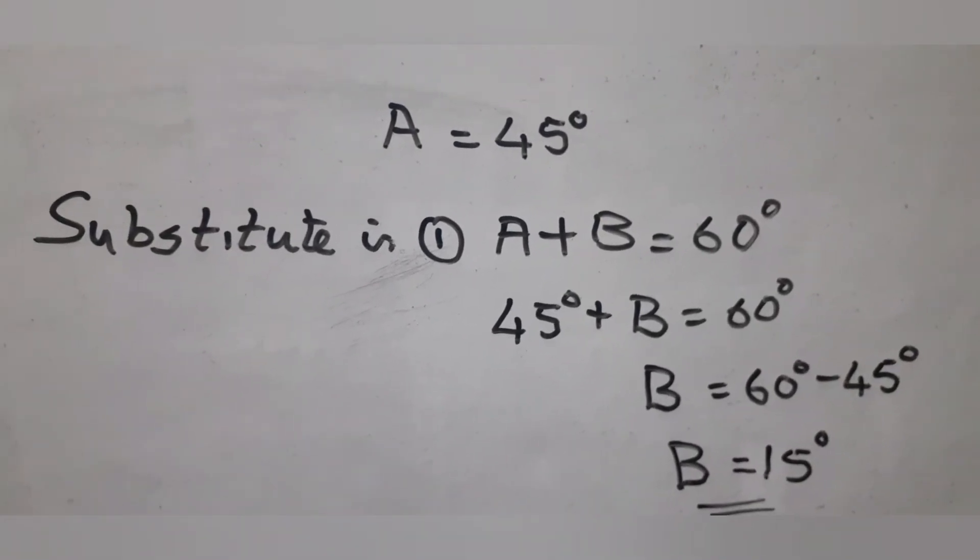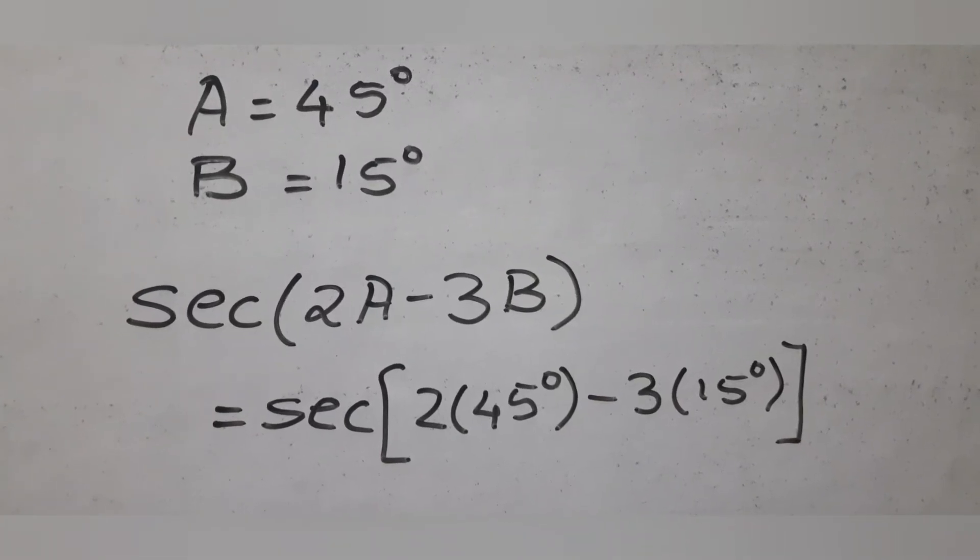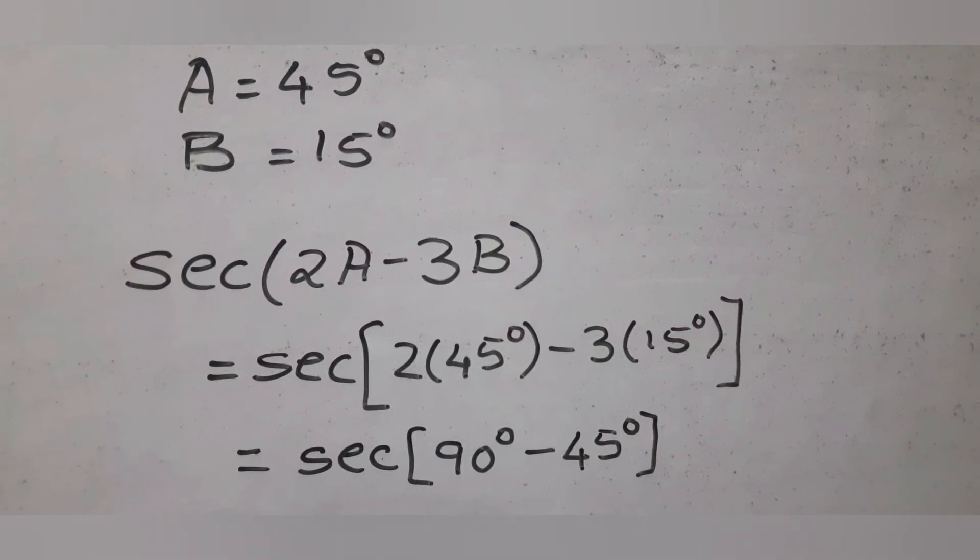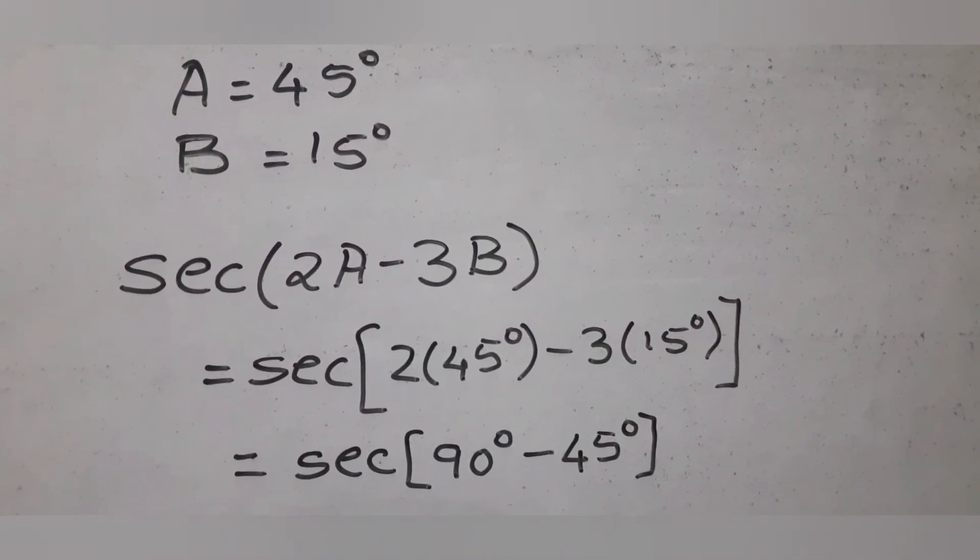Now using A = 45° and B = 15° in sec(2A - 3B), we simplify to get sec(45°) = √2.